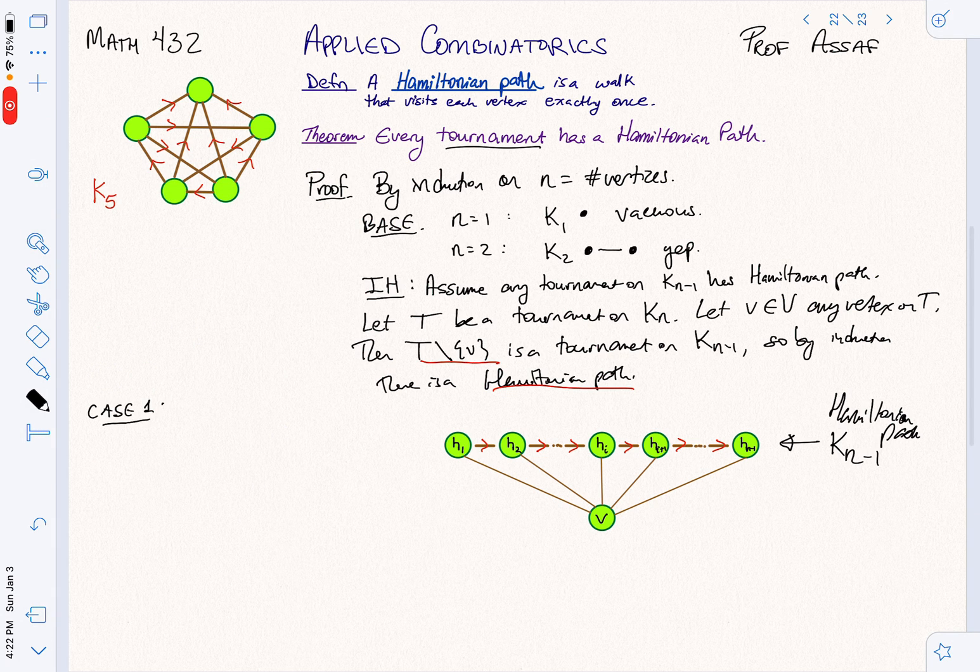Let's do some cases. Case 1: what if I have V to H1, and I go like that? That means I've got an edge like this, so here's my Hamiltonian path. Cool. So I get a Hamiltonian path. My Hamiltonian path is V, H1, all the way up to Hn minus 1. Done.